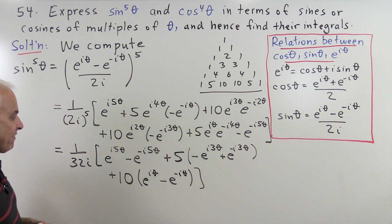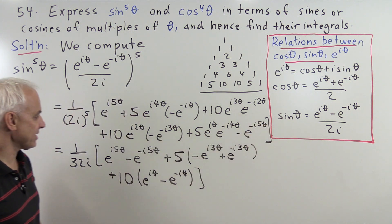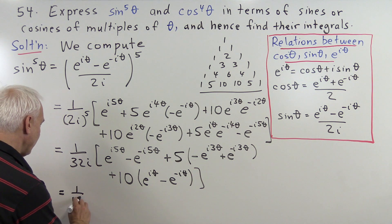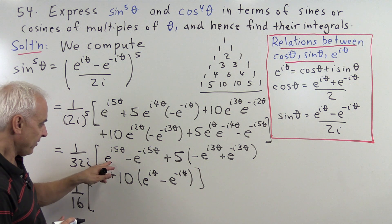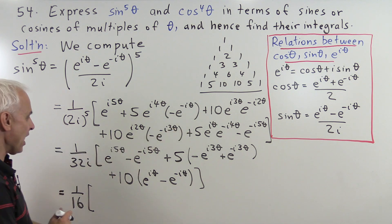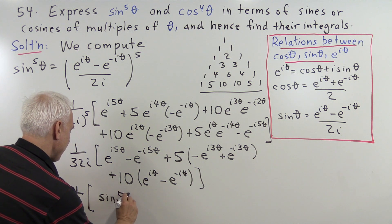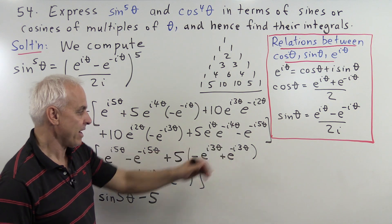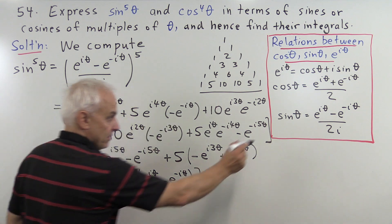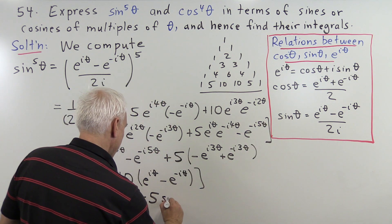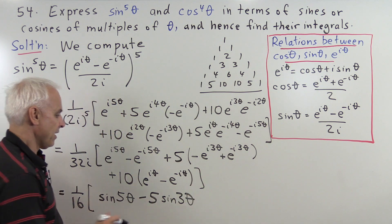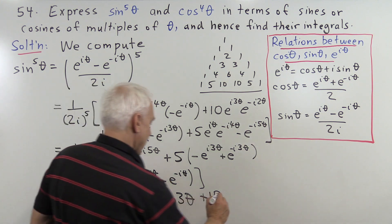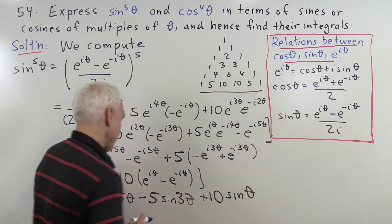Now we identify terms essentially in the form of sine theta. Taking out one of the 2's and the i, we write this as 1 over 16 times: taking e to the i5 theta minus e to the minus i5 theta and dividing by 2i gives sine of 5 theta. Then minus 5 times e to the i3 theta minus e to the minus i3 theta divided by 2i gives sine 3 theta. And plus 10 times e to the i theta minus e to the minus i theta divided by 2i gives sine theta.